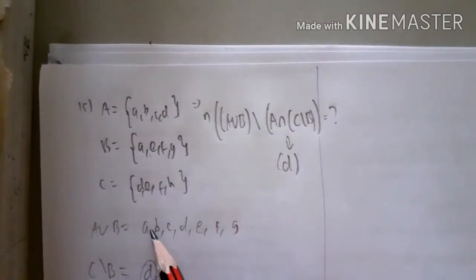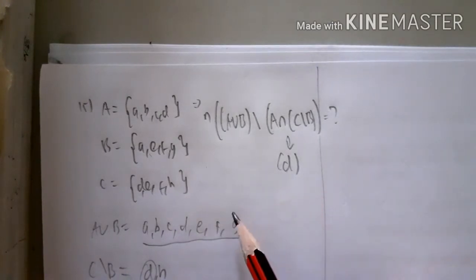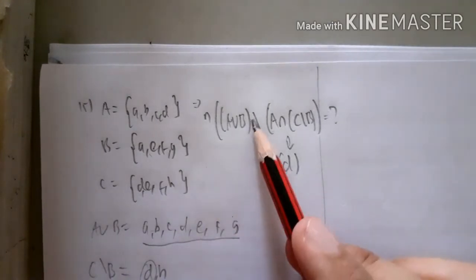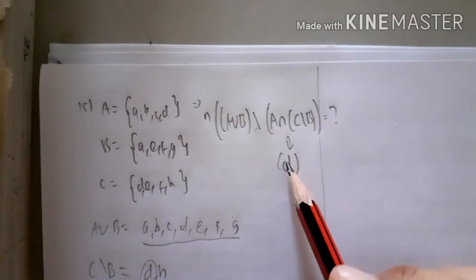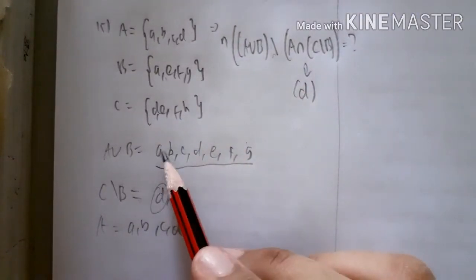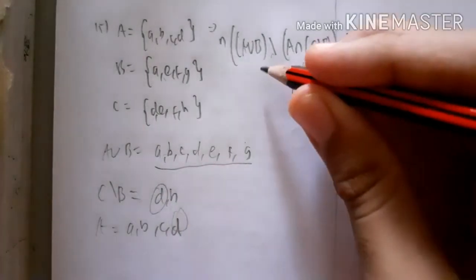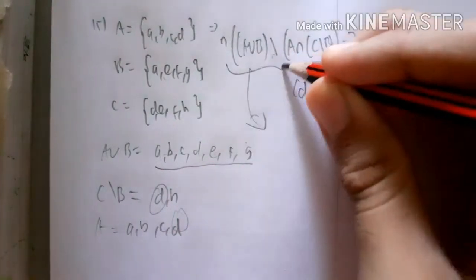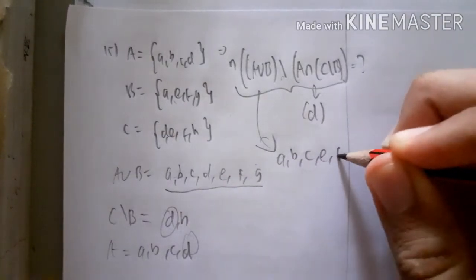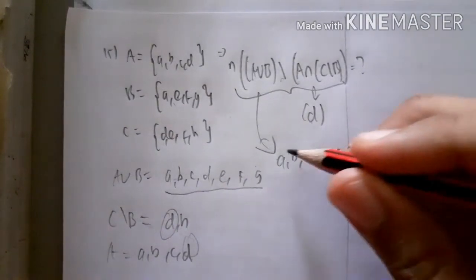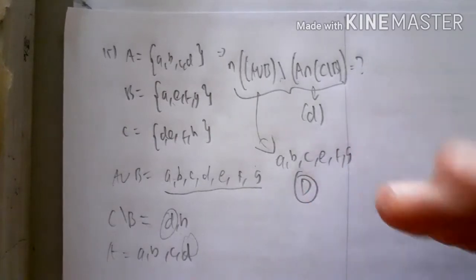For A∪B complement of {d, h}, complement means the elements not in that set. So the answer is {a, b, c, e, f, g}, which contains six elements. The answer is option D.